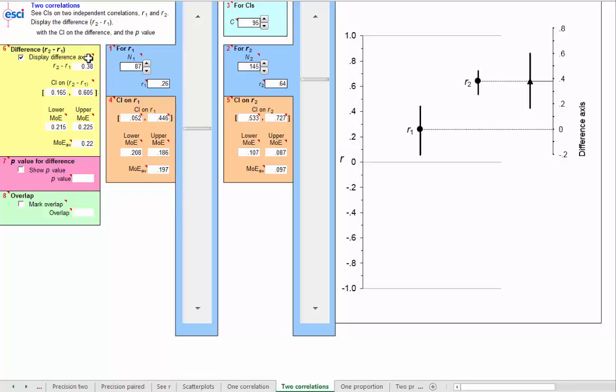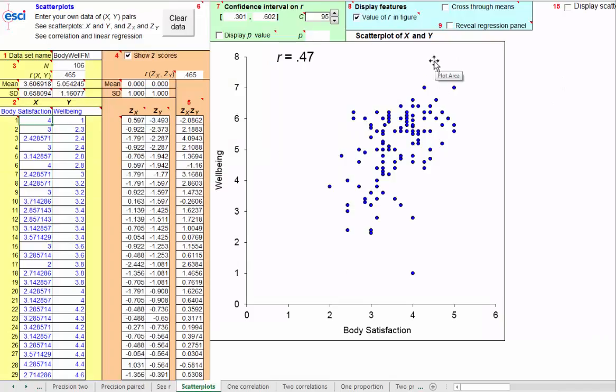I can finish by going back to the data set we started with and just say again what a wonderful picture a scatter plot is for representing a relationship between an x and a y variable, and how valuable it can be to use this r-value calculator from the sample as the basis for estimating the correlation in an underlying population.